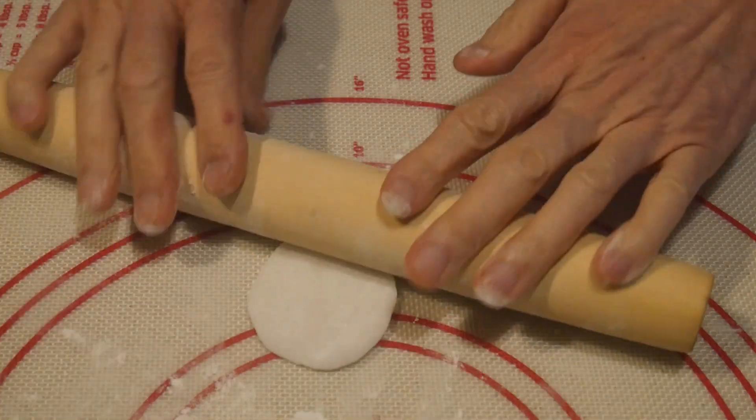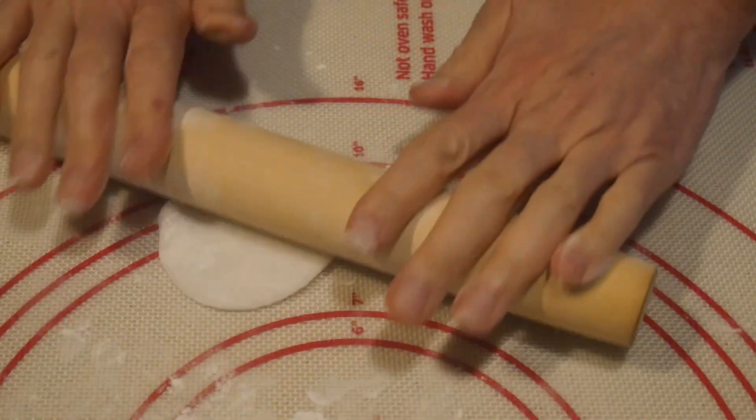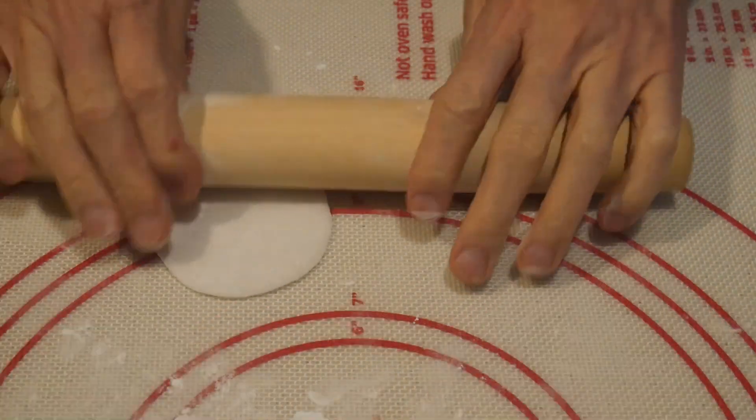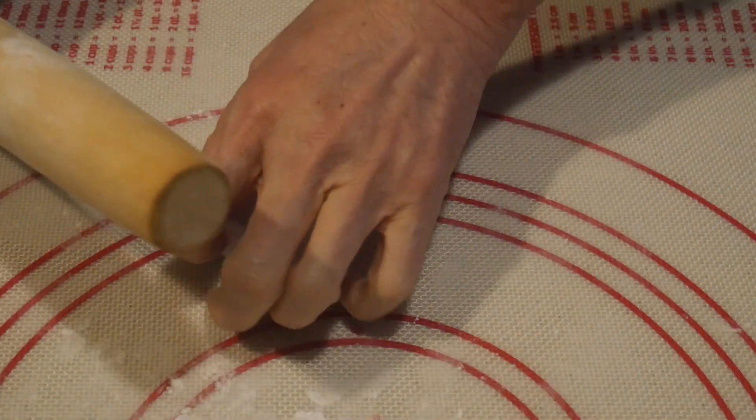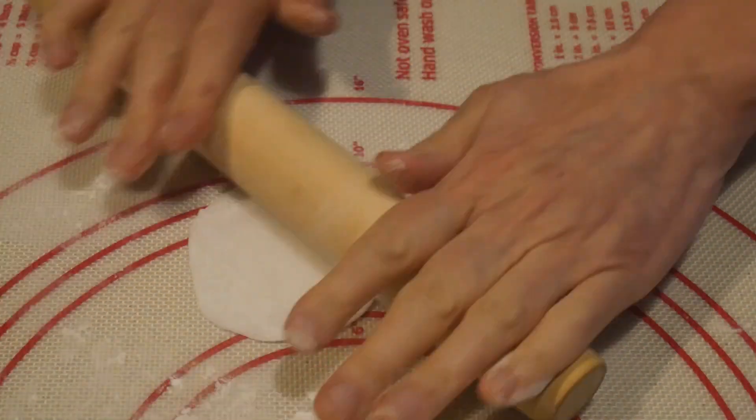For example, the tapioca starch has a low amylose content. Therefore, by adjusting the ratio between the wheat starch and the tapioca starch, you can change the consistency as well as the texture of the skin.